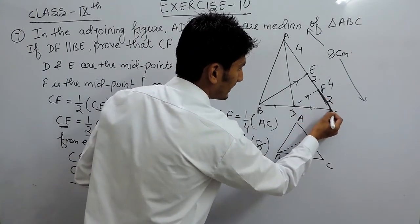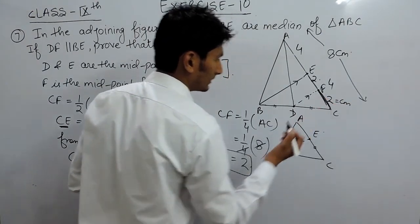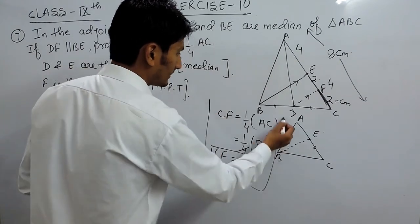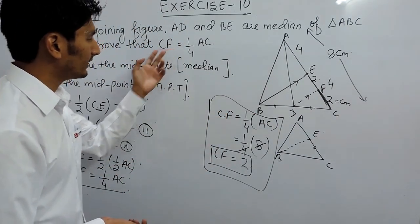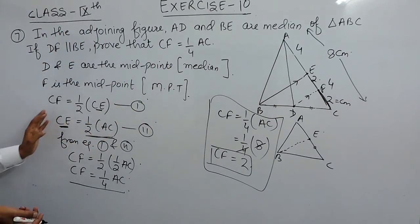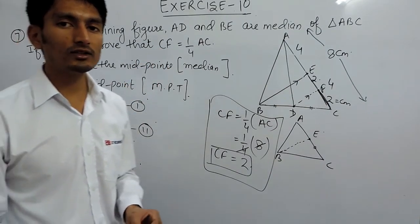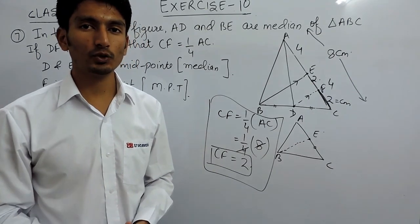So CF is equal to 2 cm. This is also how you can prove this same thing instead of writing it. So this is how you can solve this question. Thank you.